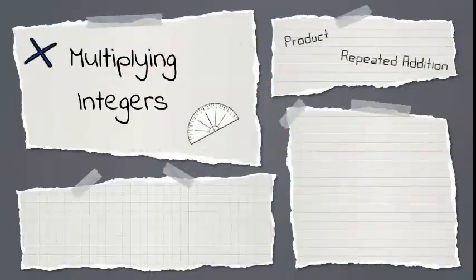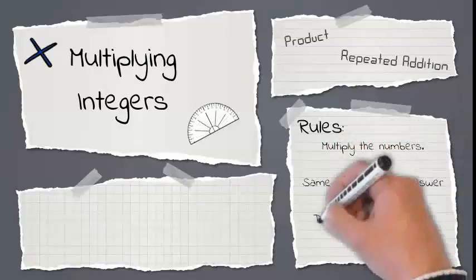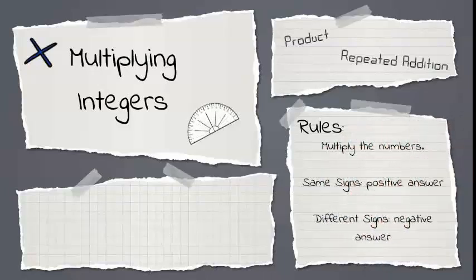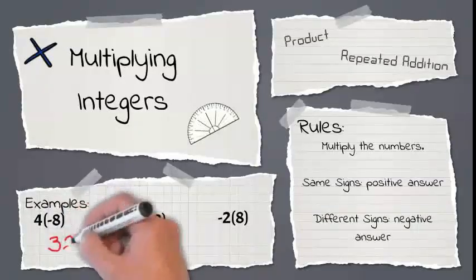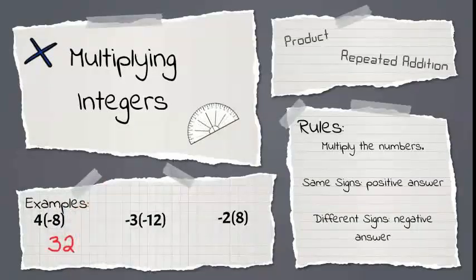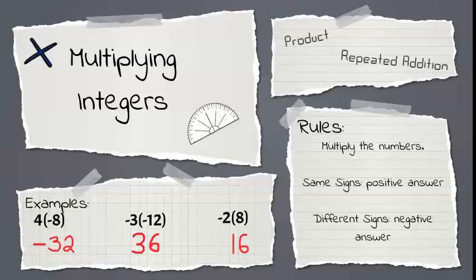Now let's check out multiplication. The rules for multiplication are to multiply the numbers, and if they have the same sign, the answer is positive. If they have different signs, the answer is negative. Let's try some examples. 4 times negative 8: 4 times 8 is 32, and the signs are different, so our answer is negative. Negative 3 times negative 12: 3 times 12 is 36, and they have the same sign, so our answer is positive. The last problem says negative 2 times 8: 2 times 8 is 16, and the signs are different, so our answer is negative.